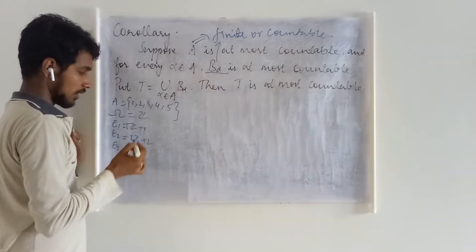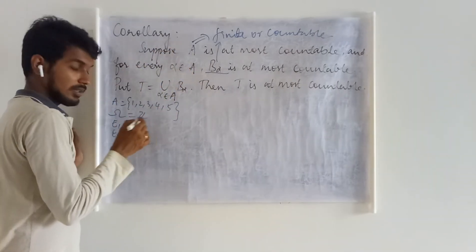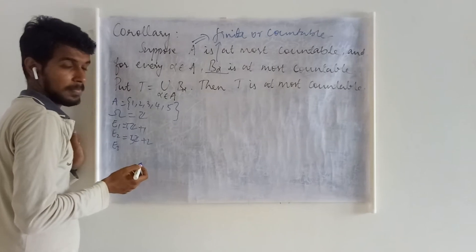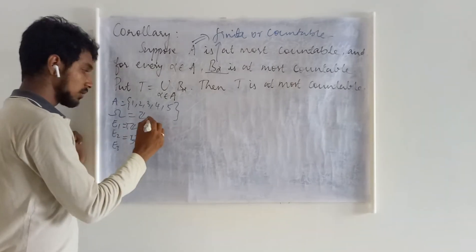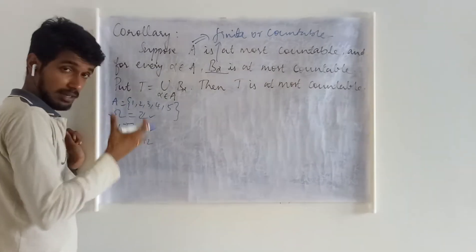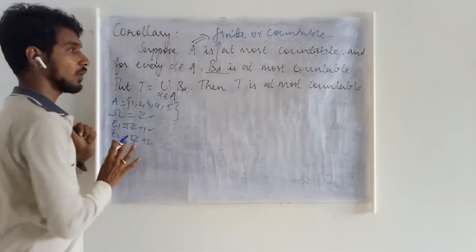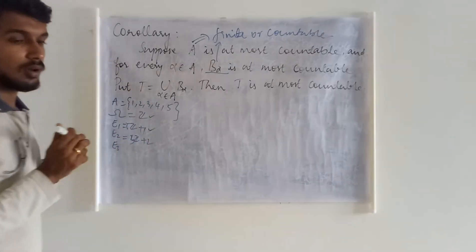For every element, we are considering at most countable set. Even this can be put in one-to-one correspondence with J. Here they are exactly countable, but in a more general sense we can say this is at most countable.